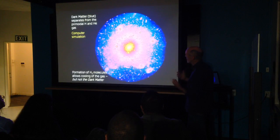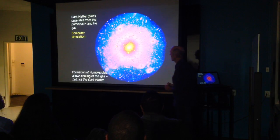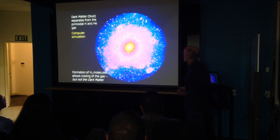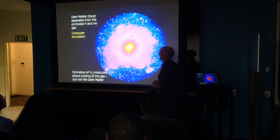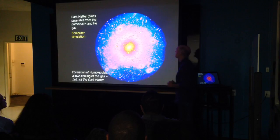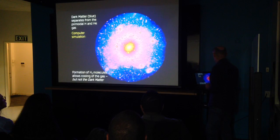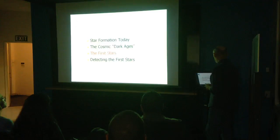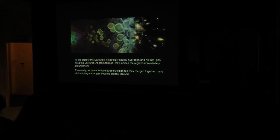It's thought that hydrogen H₂ molecules in big clouds of hydrogen and helium provide a cooling mechanism that does a crude approximation of what dust does today. This brings us to the first star.